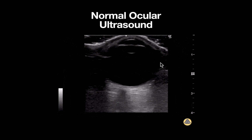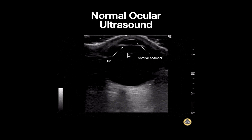Let's look at some important anatomy from superficial to deep. At the top of the screen we can identify an anechoic anterior chamber. Just deep to this is our iris, which appears hyperechoic. A few millimeters below this is our lens, and just below it, this anechoic area is our vitreous.